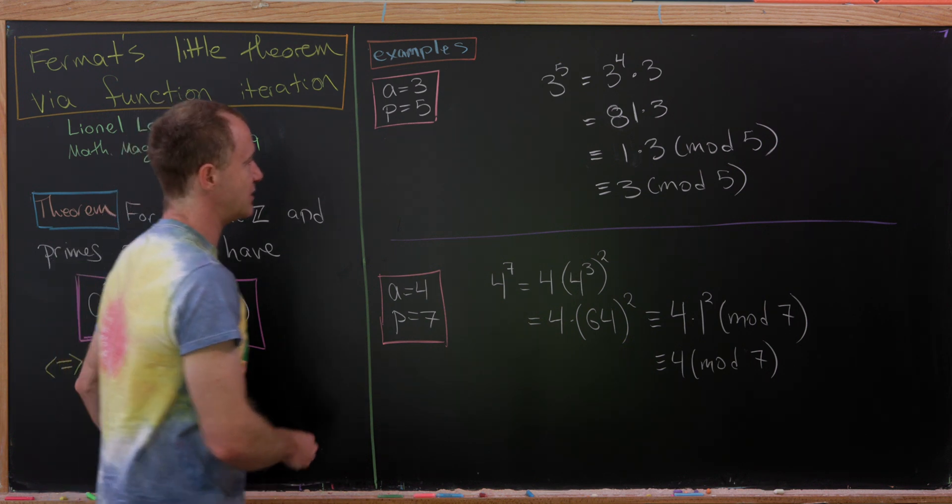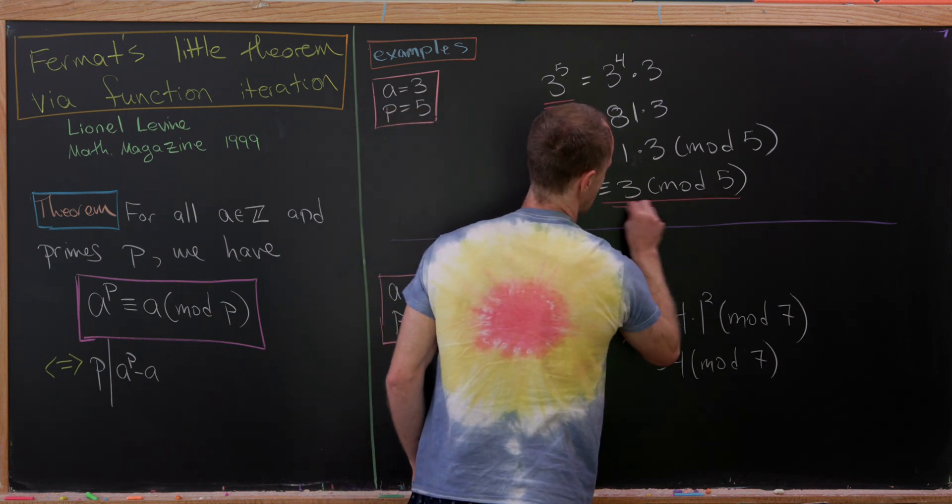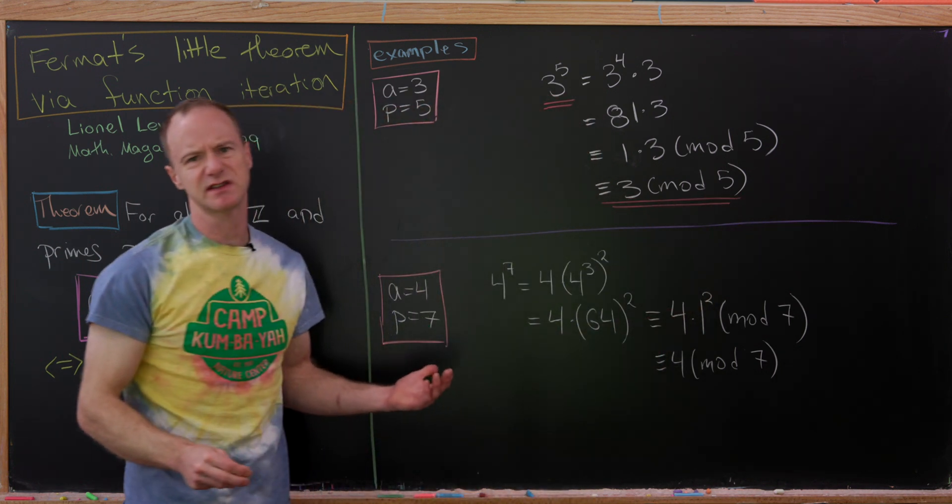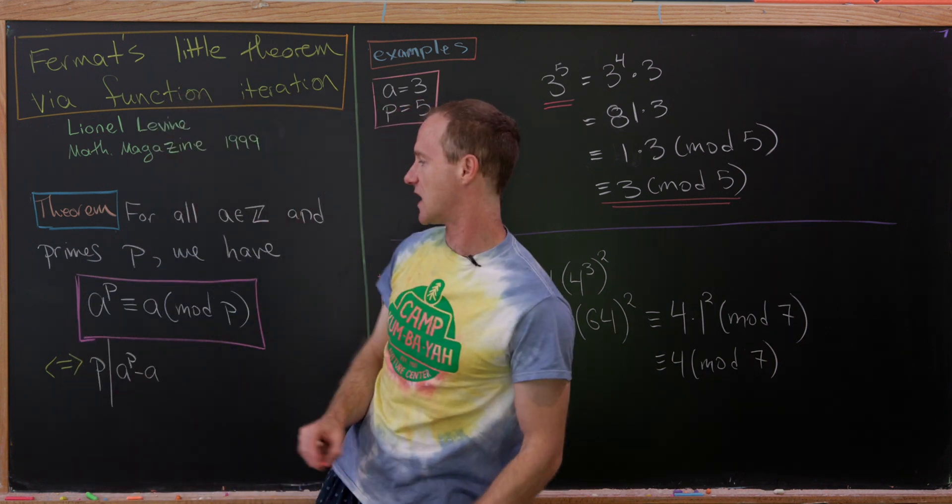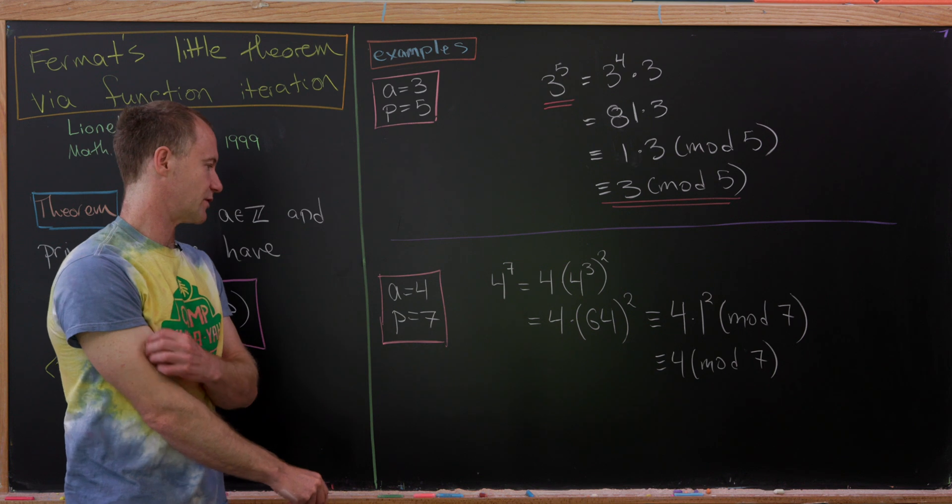So when we reduce this mod 5, we get 1 times 3, which is clearly 3 mod 5. But now if we look at this maybe from the extreme left to right-hand side, well, we've shown that this indeed does satisfy Fermat's Little Theorem.